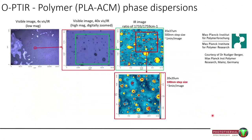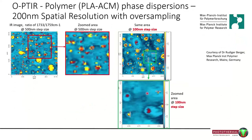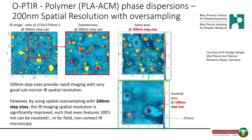This phase dispersion example: when you zoom in and do a really high-resolution step image, you can see some incredibly small features. Spectra on and off these hotspots look as you'd expect. This is a ratio image at 1759 and 1733 wavenumbers, and we can see where the contrast in these images originates from. Even some of these small features can be in the couple-of-hundred-nanometer region.